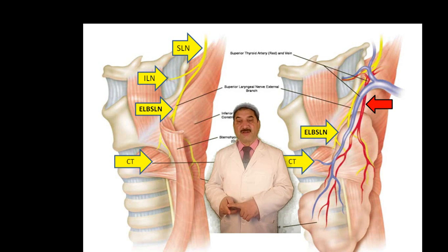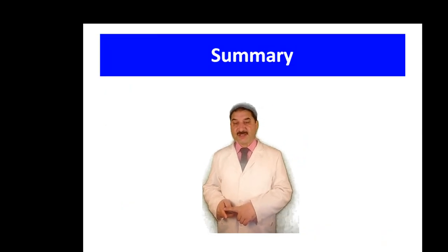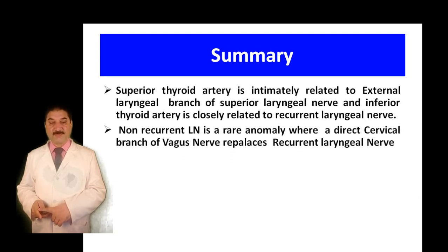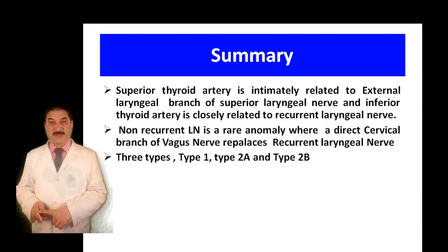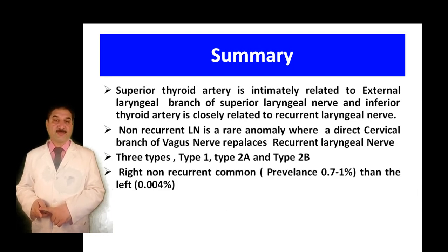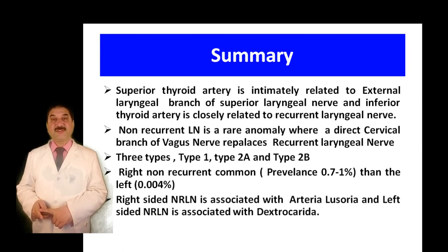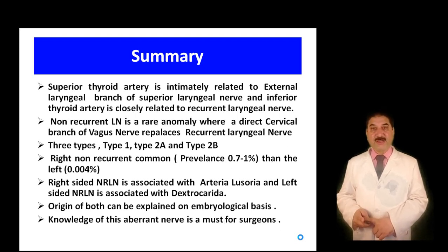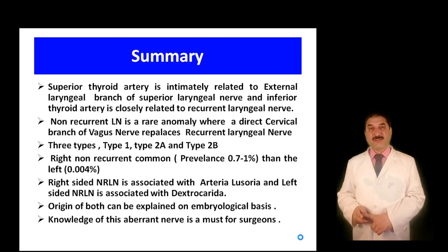To summarize: the superior thyroid artery is intimately related to the external laryngeal branch of the superior laryngeal nerve, and the inferior thyroid artery is closely related to the recurrent laryngeal nerve. The non-recurrent laryngeal nerve is a rare anomaly where a direct cervical branch of the vagus nerve replaces the recurrent laryngeal nerve. There are three types: Type 1, Type 2A, and Type 2B. The right non-recurrent laryngeal nerve is more common than the left. The right-sided type is associated with arteria lusoria, and the left-sided type with dextrocardia and situs inversus. Knowledge of this aberrant nerve is essential for surgeons; otherwise they may injure it by mistaking it for the inferior thyroid artery, resulting in hoarseness of voice and stridor.